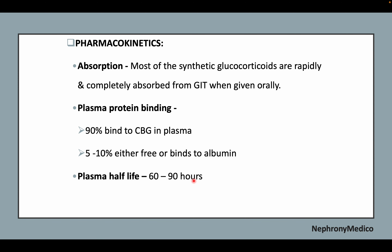Most synthetic glucocorticoids are rapidly and completely absorbed from the GIT when given orally. About 90 percent bind to CBG in plasma and 5 to 10 percent are either free or bind to albumin. The plasma half-life is 60 to 90 hours.